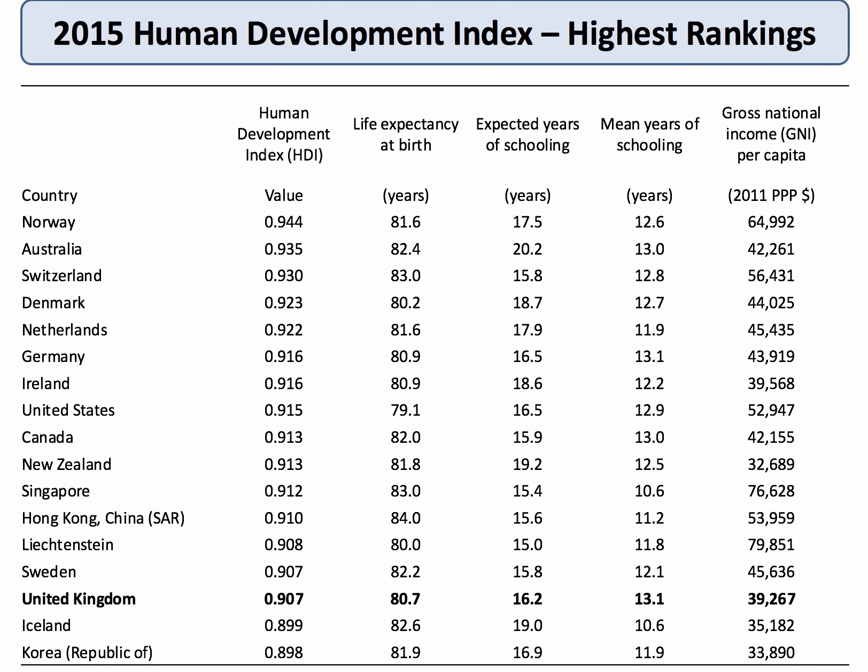Looking at the 2015 HDI rankings, Norway topped the table, Australia came second, Switzerland third, with the UK further down. Notably, Australia outperforms Singapore on HDI despite Singapore having a GNI per capita of $76,000 compared to Australia's $42,000 — meaning Australia scores better on the non-income components. South Korea, a country that has made huge development progress over the last 15–20 years, also now appears among the top-performing HDI countries.